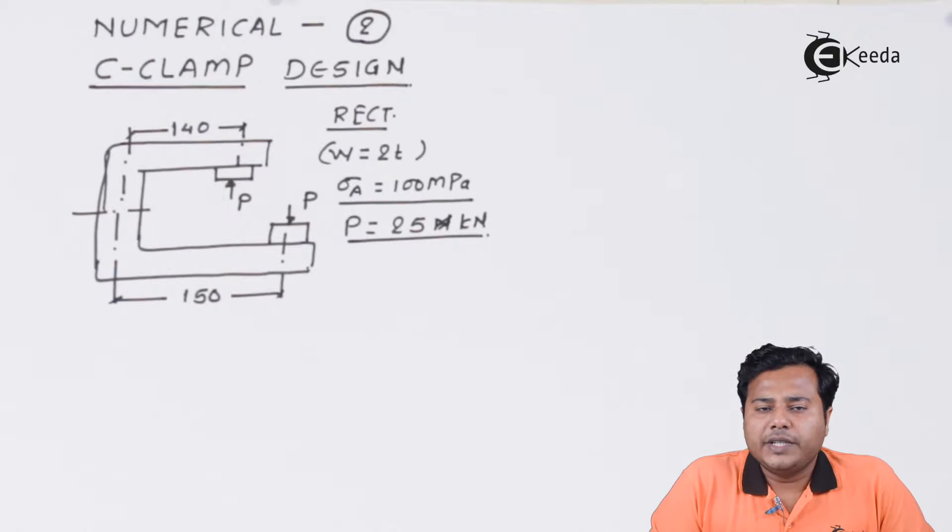For reference, we are taking two examples of curved beams. The first one we have done is hook of cranes or crane hooks, and the second one we are looking at right now are C-frames. One of the examples of C-frame is C-clamp that we use in machine shop for clamping different bodies.